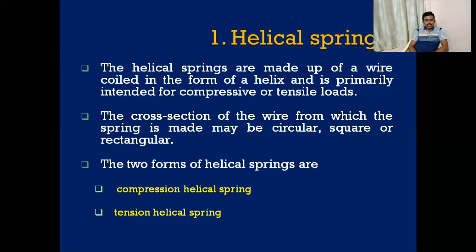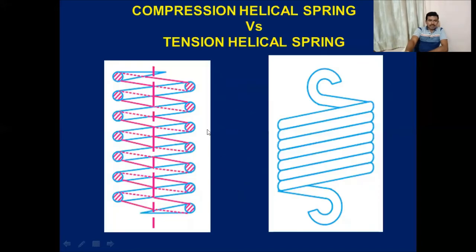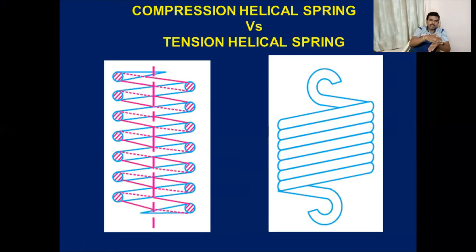The second type is a tensile helical spring, like the spring used in a spring balance, where initially the coils are in contact with each other. When load is applied the coils are subjected to elongation and the contact between adjacent coils disappears. In the compression spring there is a gap between adjacent coils, and when load is applied the coils come close to each other and contact each other, producing the corresponding deflection.